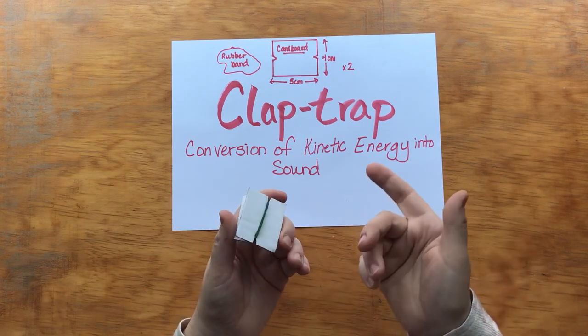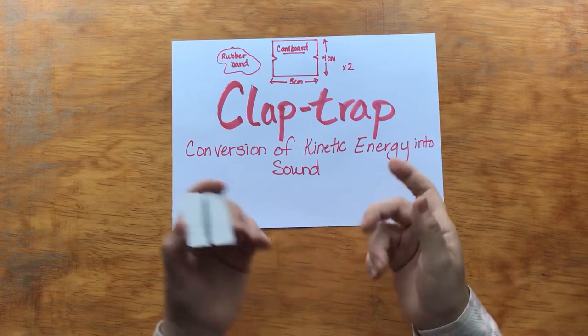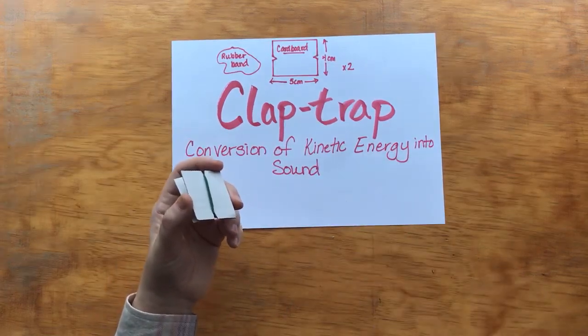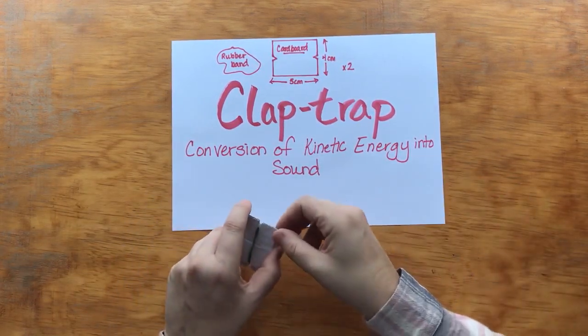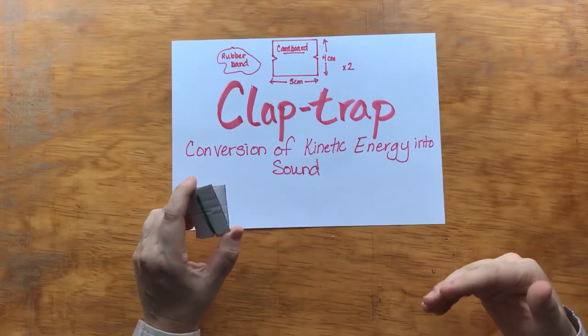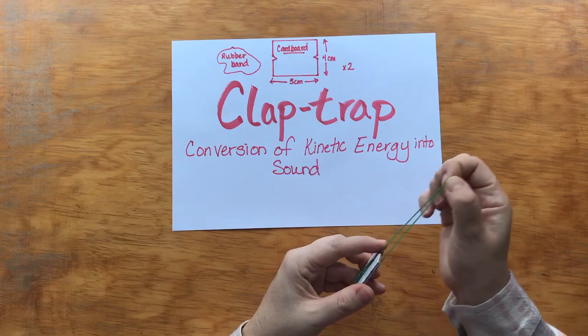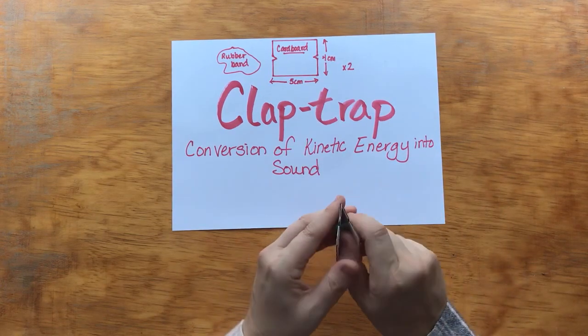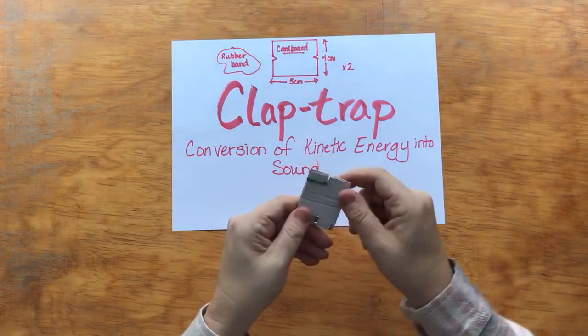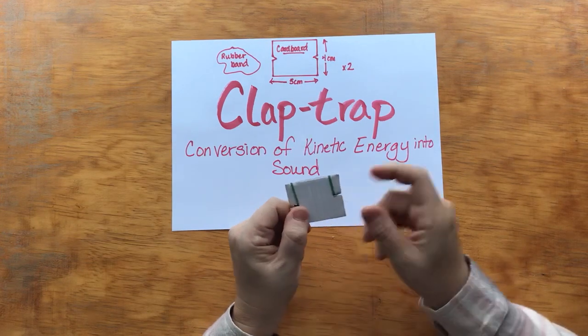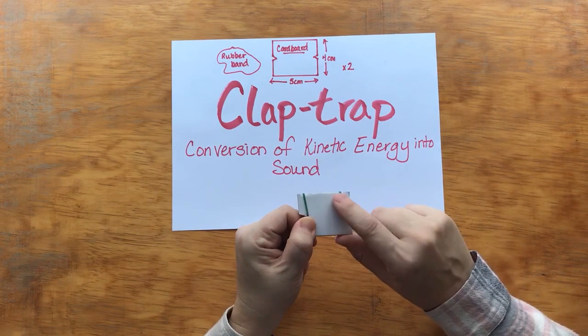It's obviously going to be clear to the students that the rubber band somehow is causing them to clap against each other but the question you want to ask them is how. So for you the teacher basically what's happening is when the rubber band is stretched around like that it's going to have energy stored into it this is called elastic energy.